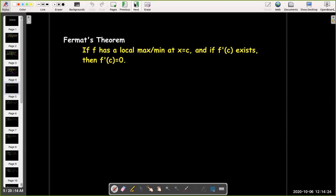Well, we're going to look at Fermat's Theorem. No, not that theorem. It's not his last theorem. It's just another theorem by Fermat. So if f has a local max or min at x equals c, and if f'(c) exists, then f'(c) equals 0.